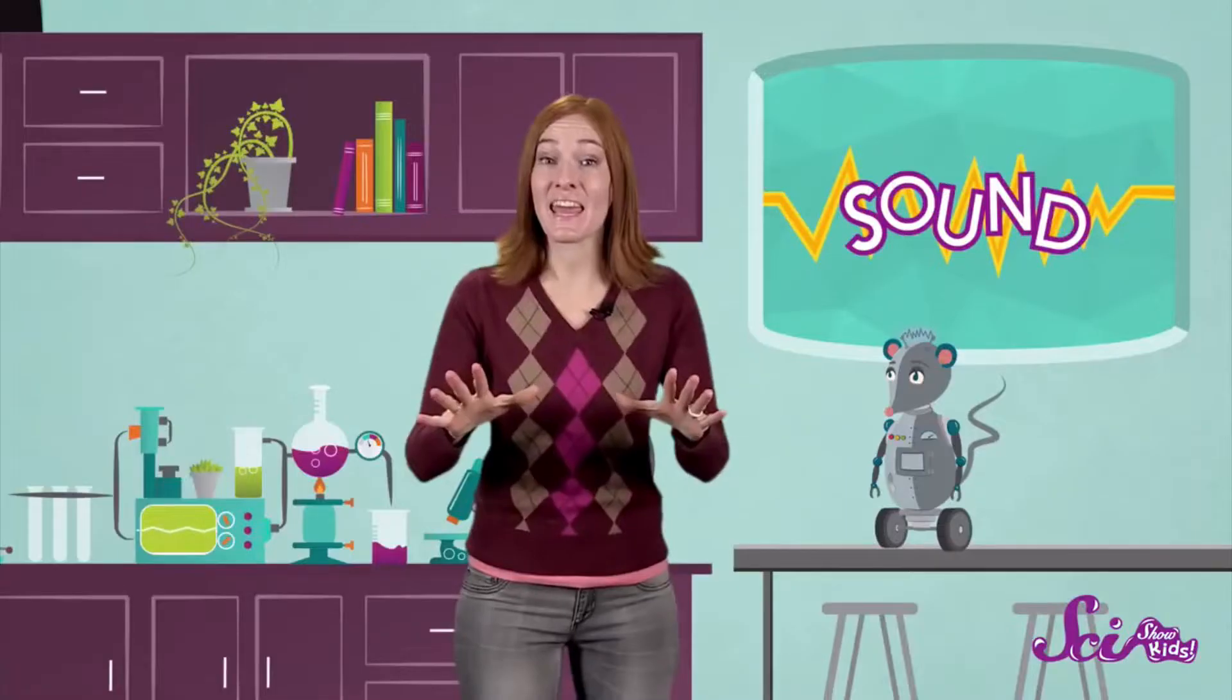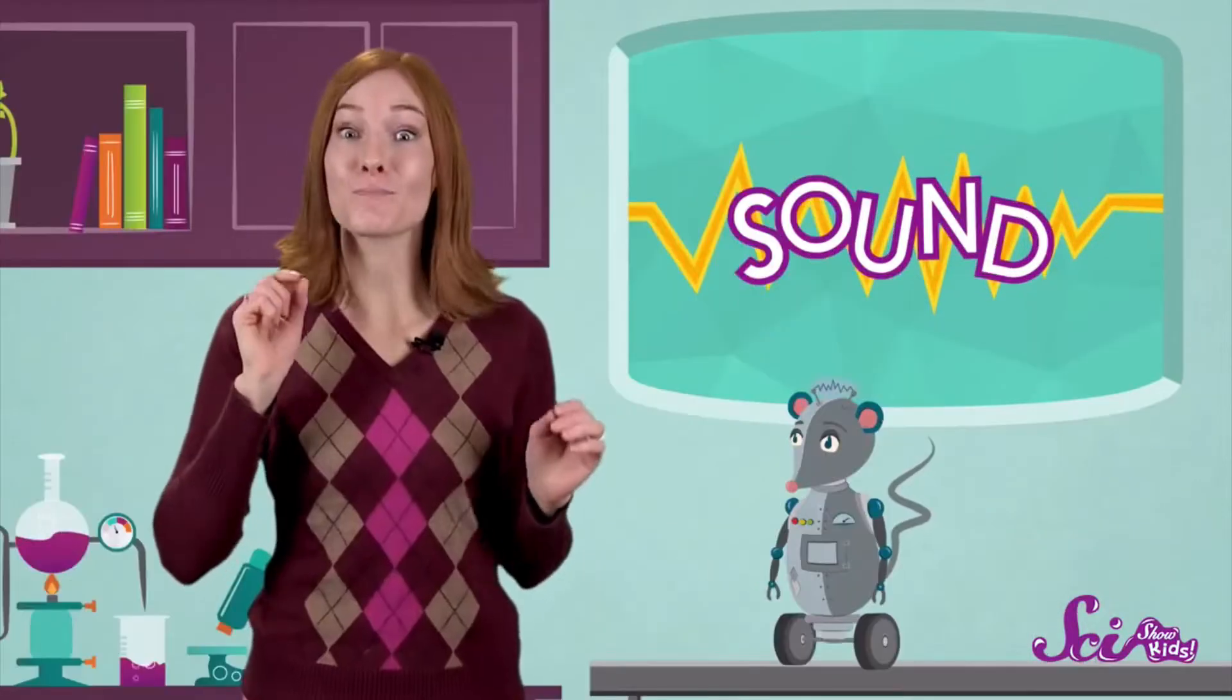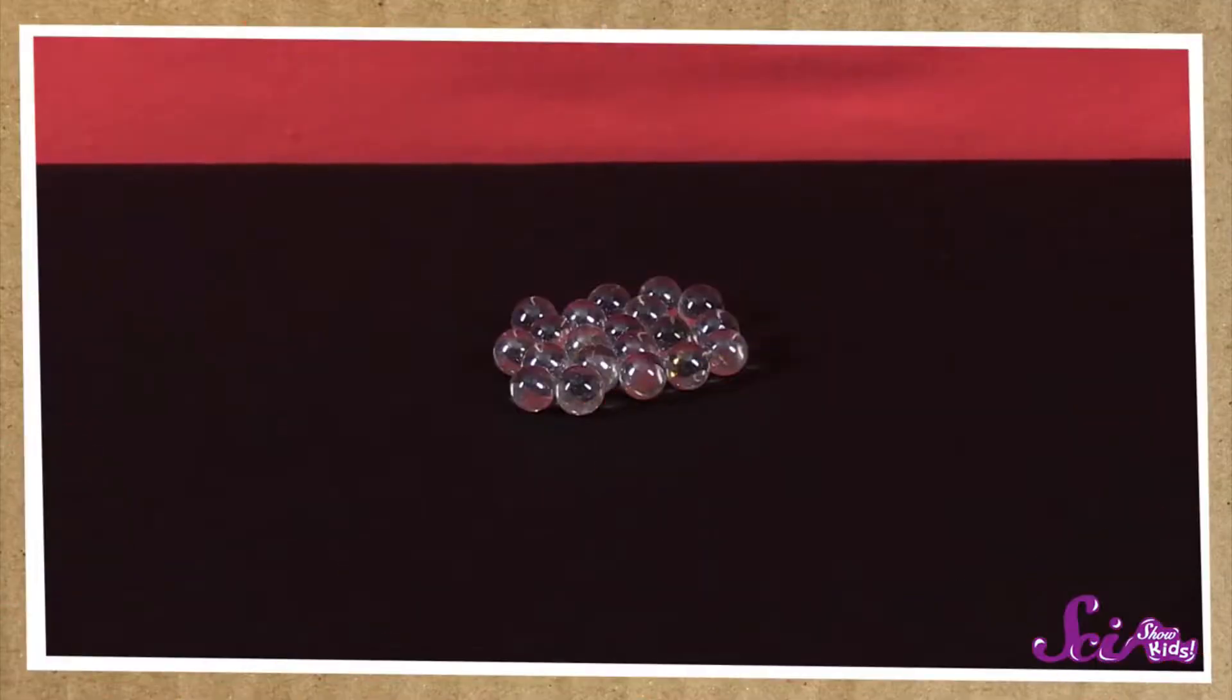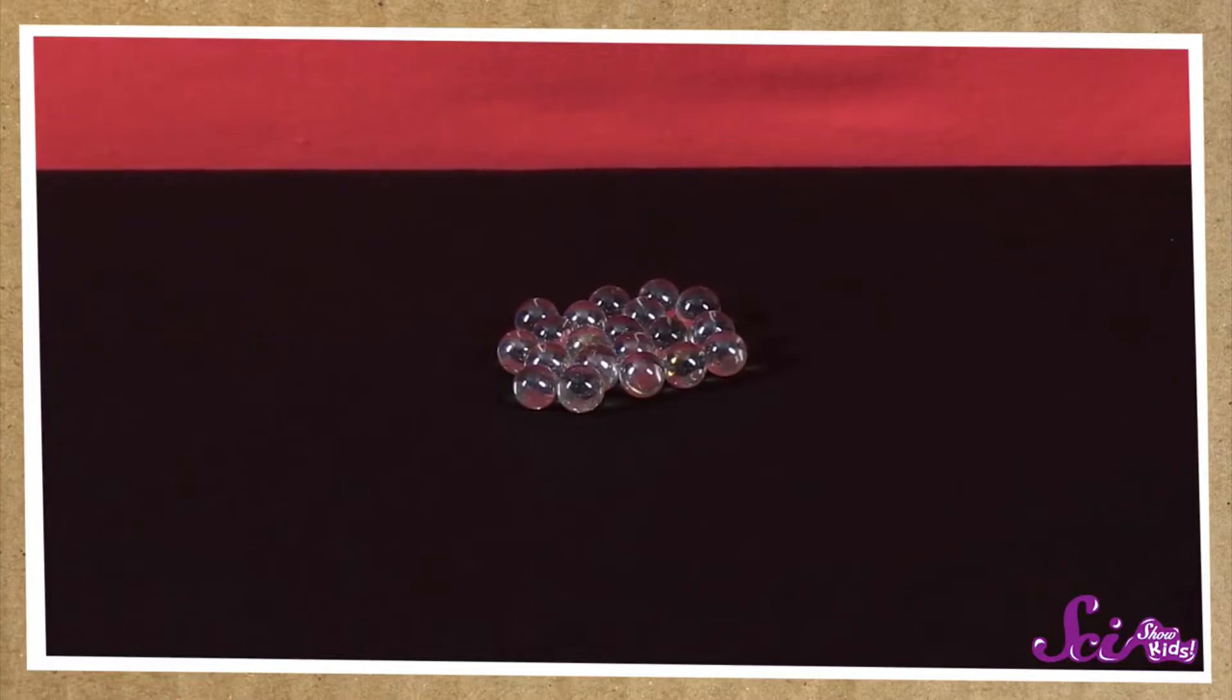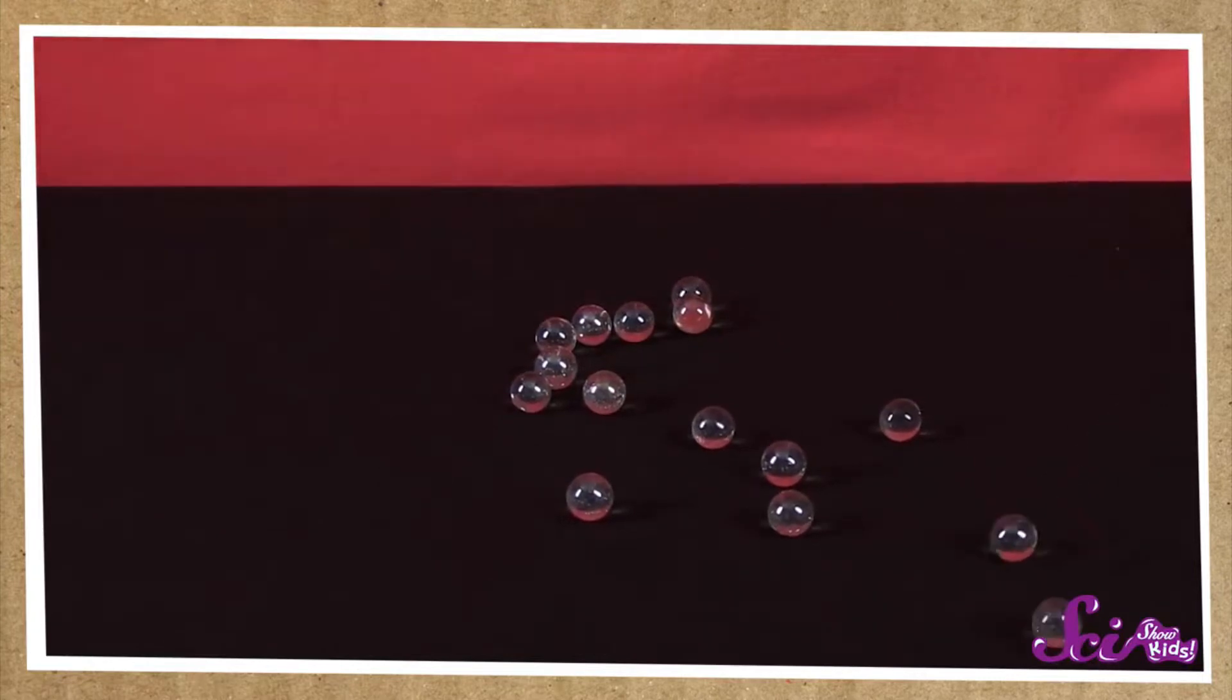So how does sound get from, say, a bell to our ears? The air all around us is made of tiny particles, and these particles are what carry sound. We can use marbles to demonstrate the teeny tiny particles that make up the air. If we put a few marbles together so they're touching, then roll another marble so that it crashes into them, the group of marbles will move. That's kind of what happens with sound.